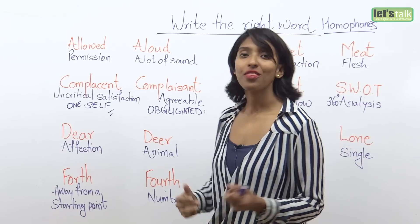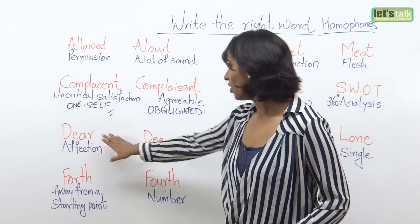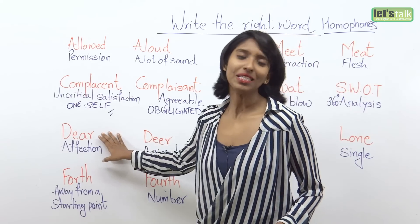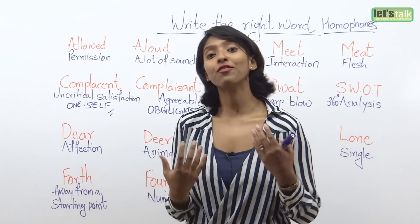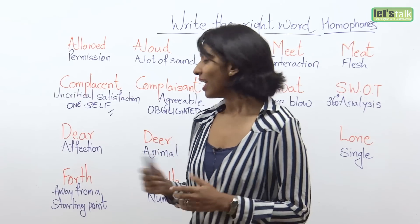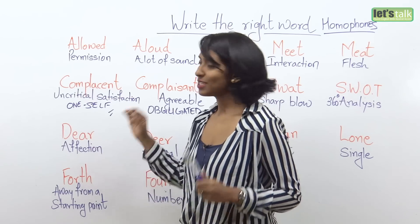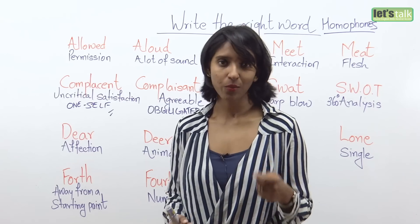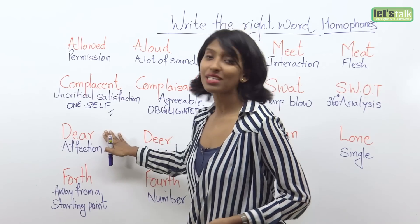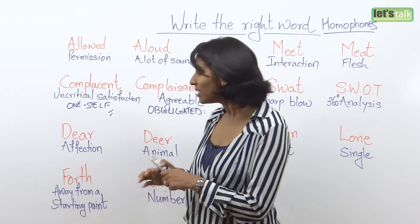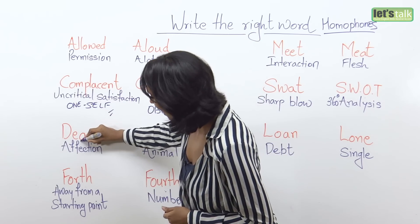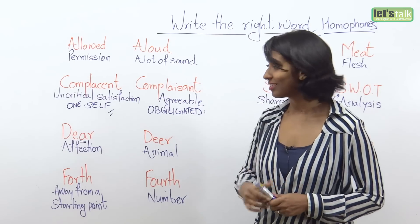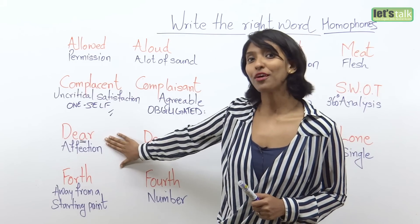Moving on to the next one: dear or deer. 'Dear' — D-E-A-R — means when you regard someone with affection. You will use this word especially when you are writing an email to someone who is very important. Please note it is D-E-A-R. This makes a lot of difference — you are regarding that person with affection.